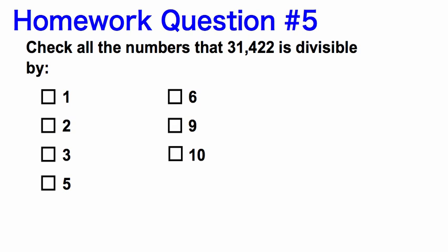Homework question number 5: check all the numbers that 31,422 is divisible by. You're taking this number and going through the list, checking which of these numbers can evenly go into it. There may be more than one answer.